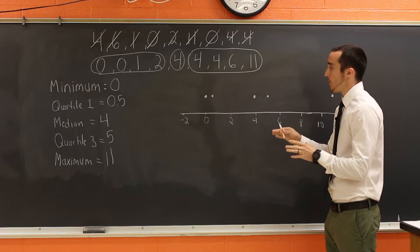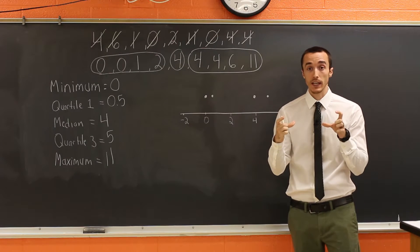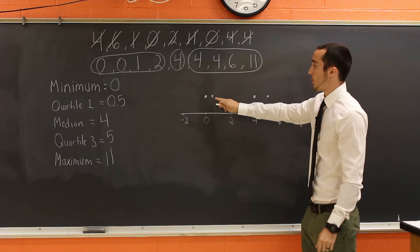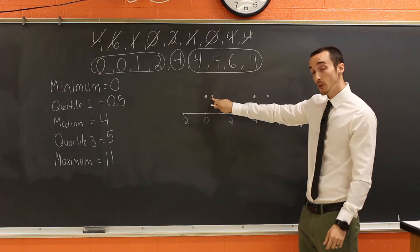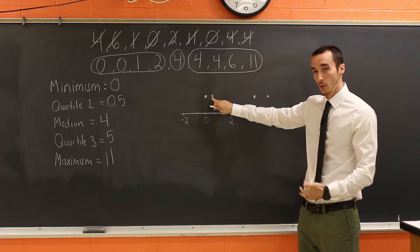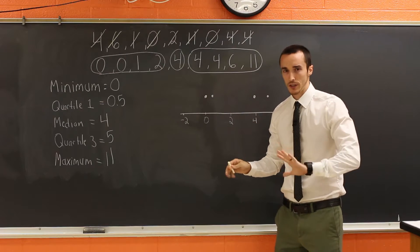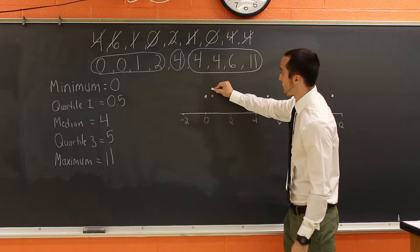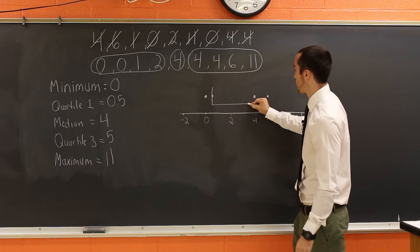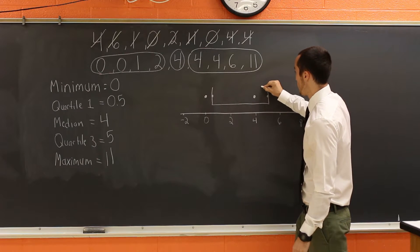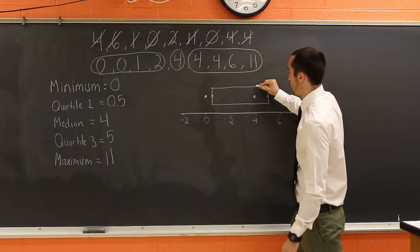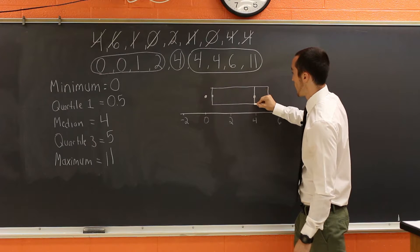So the box is just going to be a rectangle that we're going to draw that goes through the middle three points. In other words, the quartile one, median, and quartile three. Just watch and this will make more sense. So here's what this looks like. I'm literally drawing a rectangle through those numbers and I'm going to draw a vertical line straight through the median.